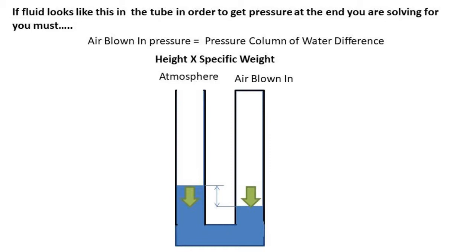So if we take the specific weight, this is the amount of weight per unit of volume of water, and multiply it times the height difference, we get the amount of pressure the water is pushing on the air. Being the air pressure and the water pressure is equal, this is the same as the air pressure.